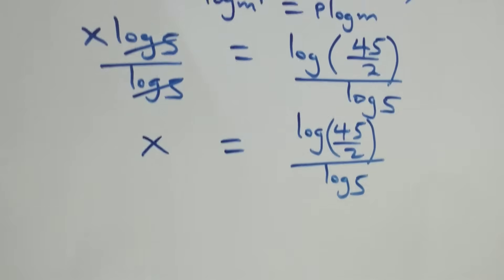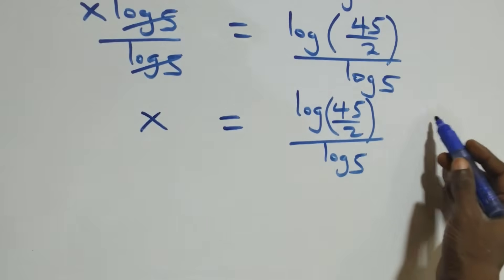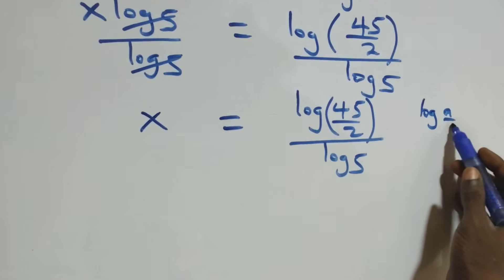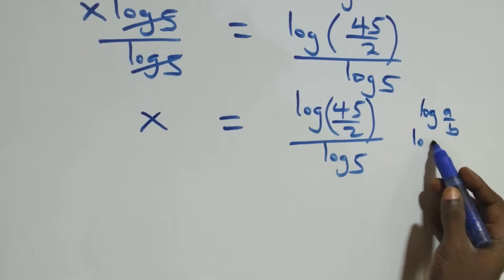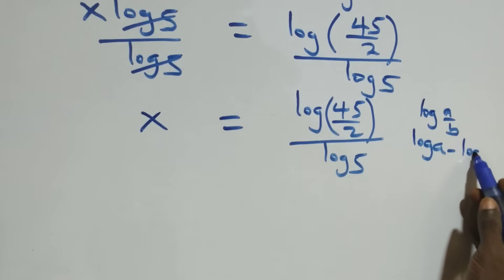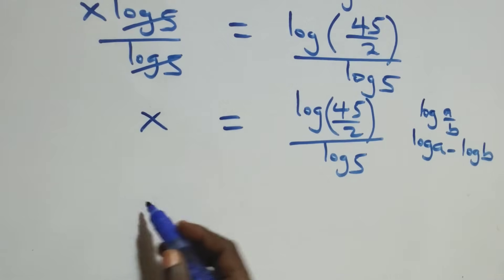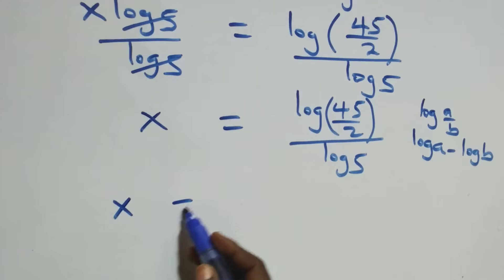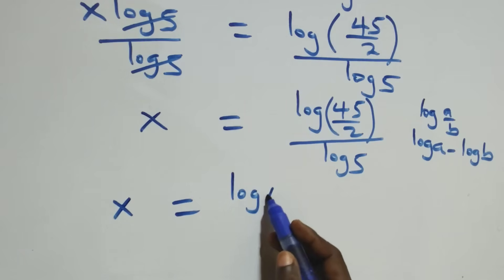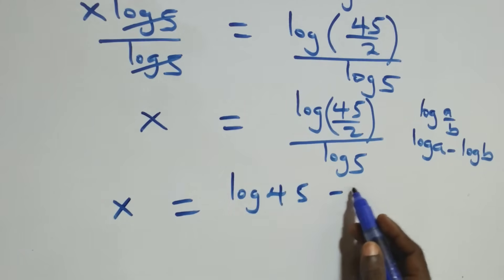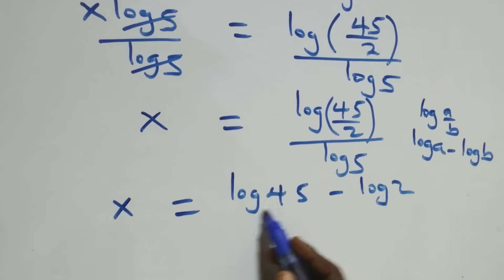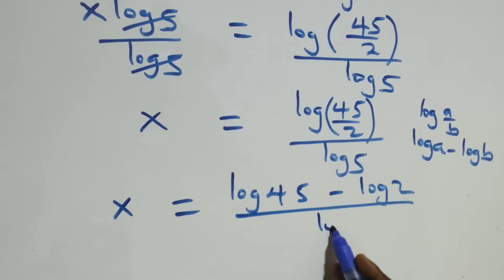This follows from a law of logarithms: when we have log(a/b), this is the same as log a minus log b. That is, here we have x equals to log 45 minus log 2, then all over log 5.